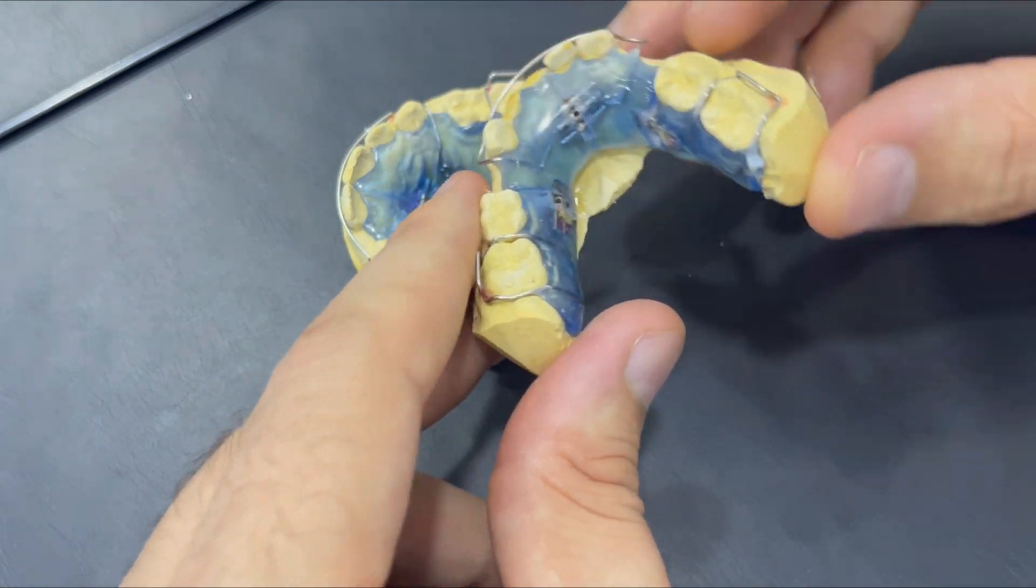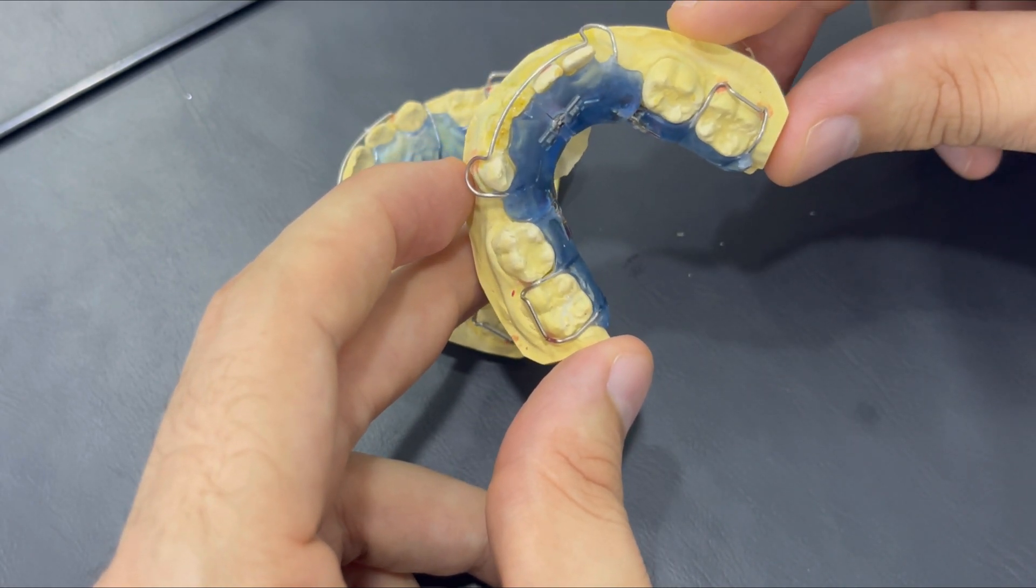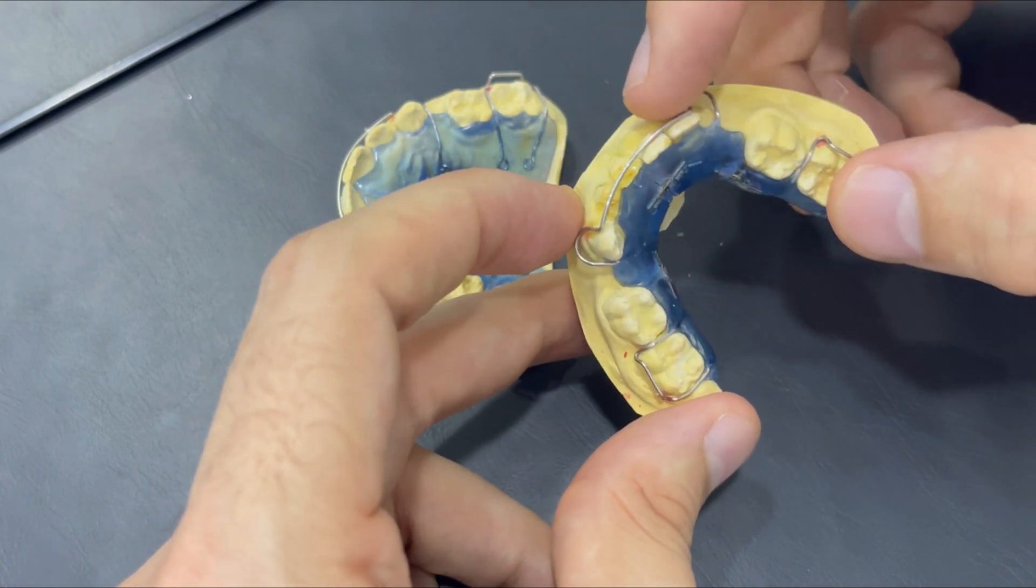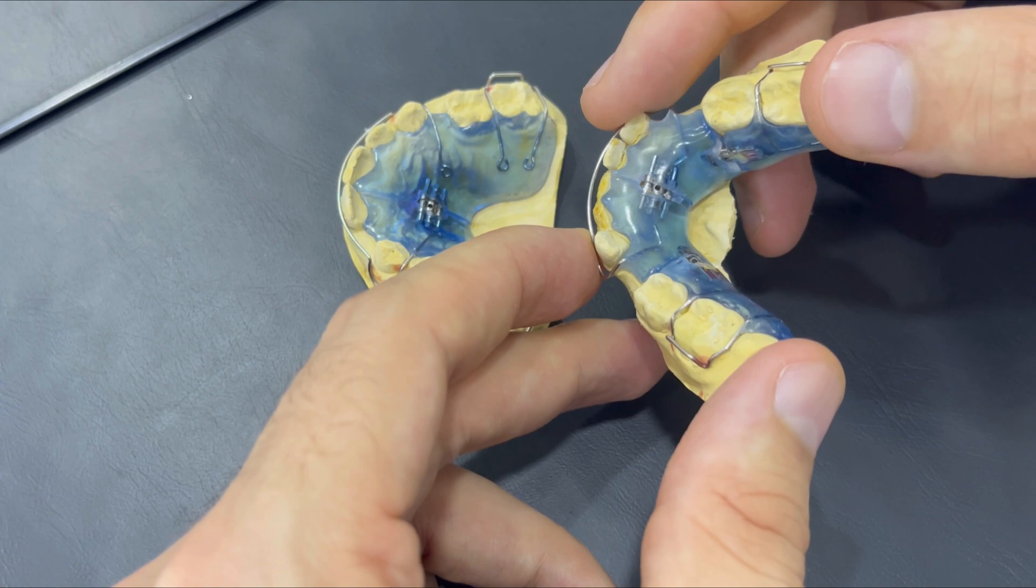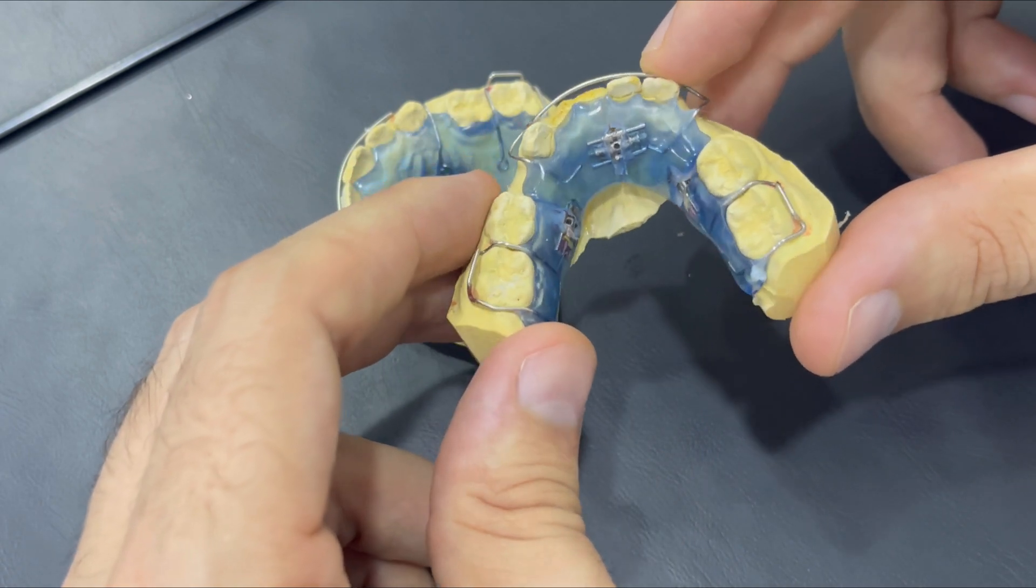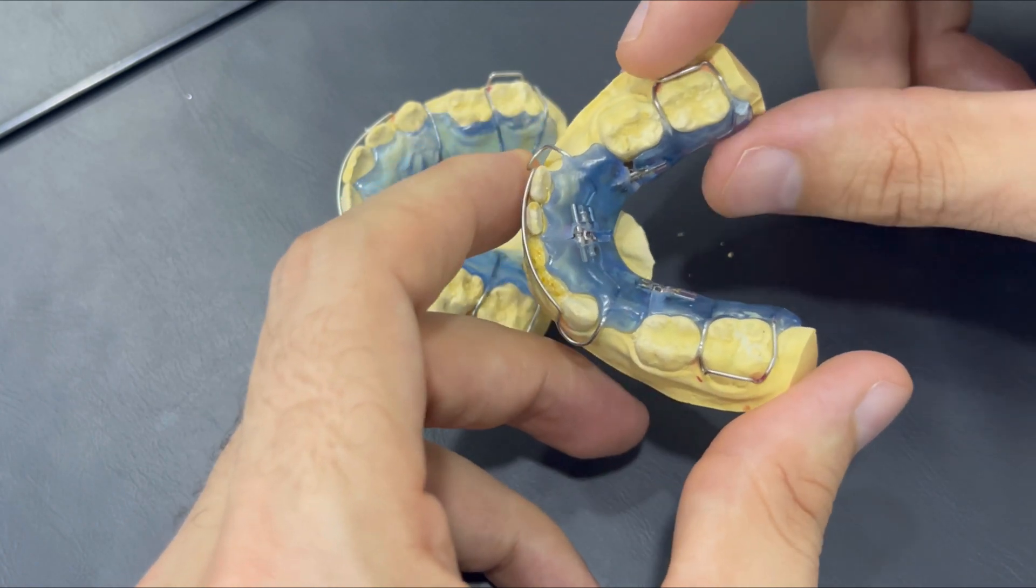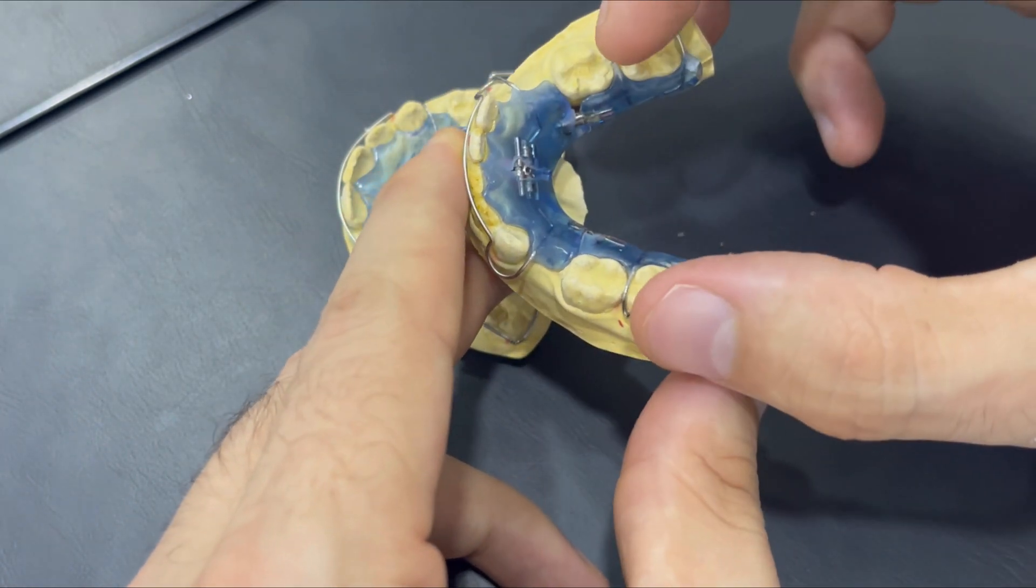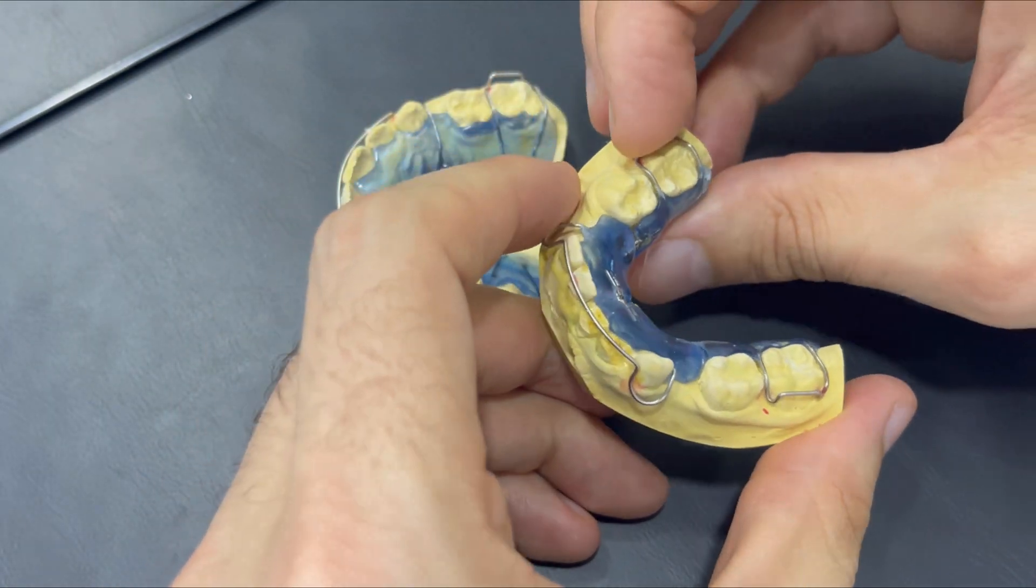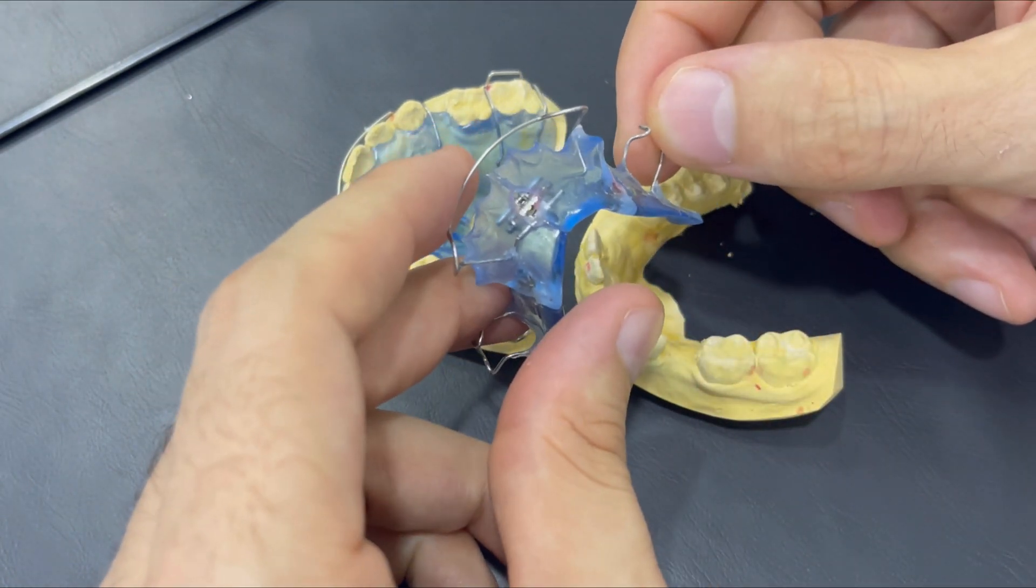For the lower appliance here, as we see again, we have three screws which is very useful to expand in the horizontal way and in the sagittal way. Because for this patient, we don't have enough space for the full permanent teeth eruption. Thus we are creating space and helping the future braces treatment to be more easier.